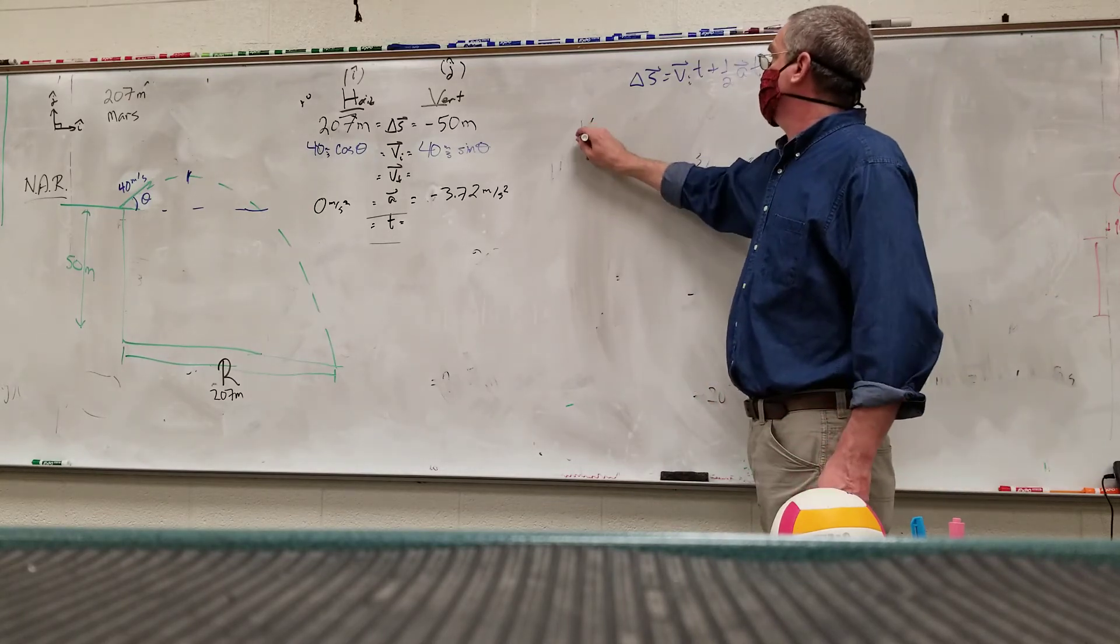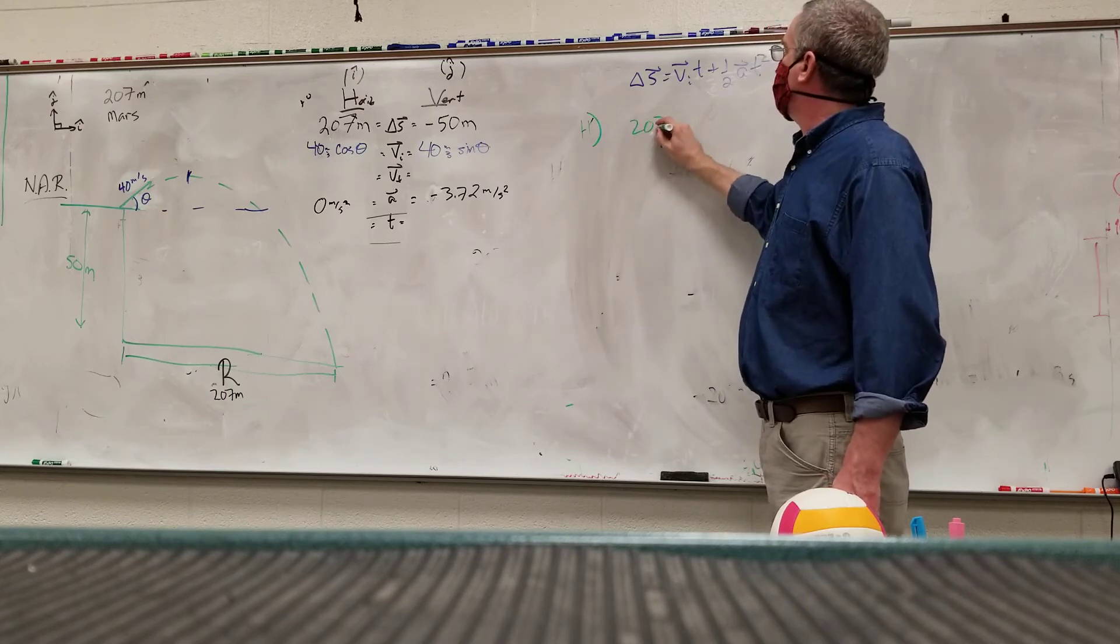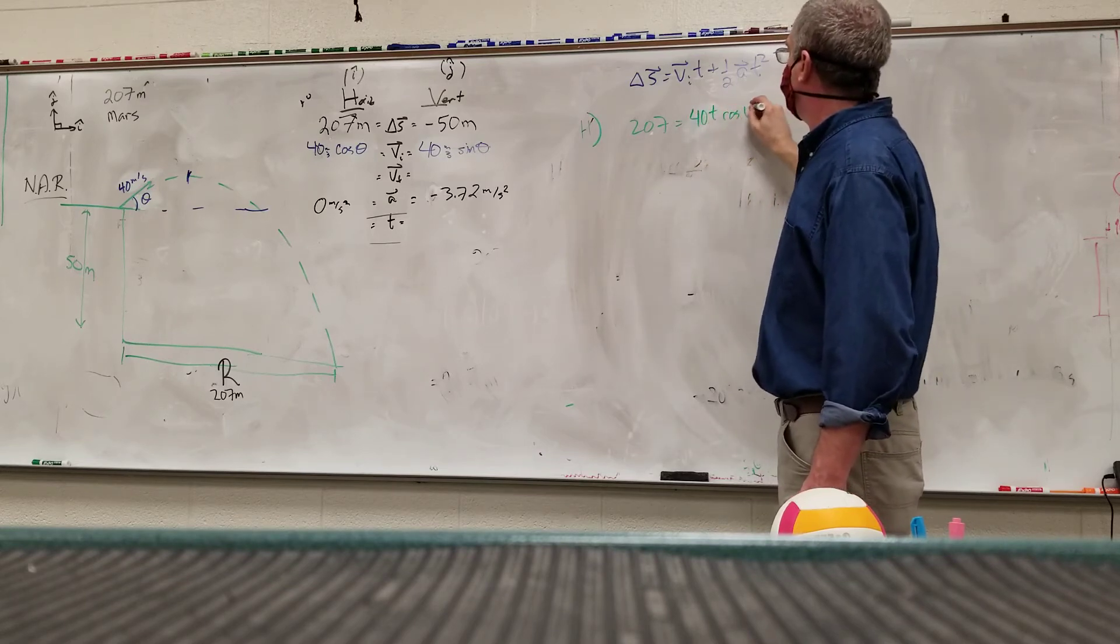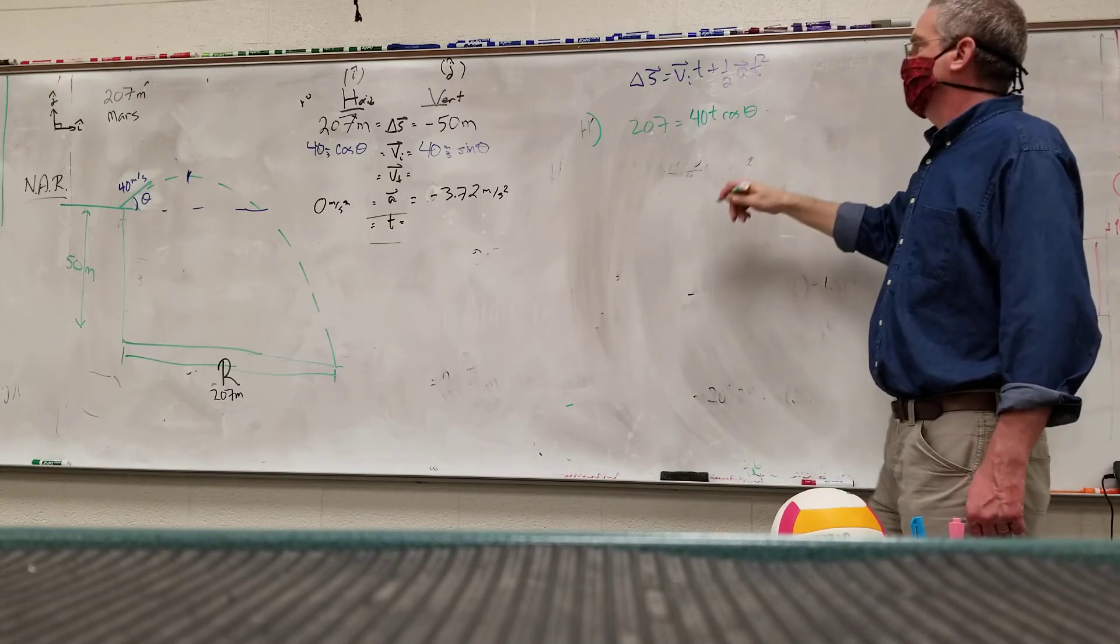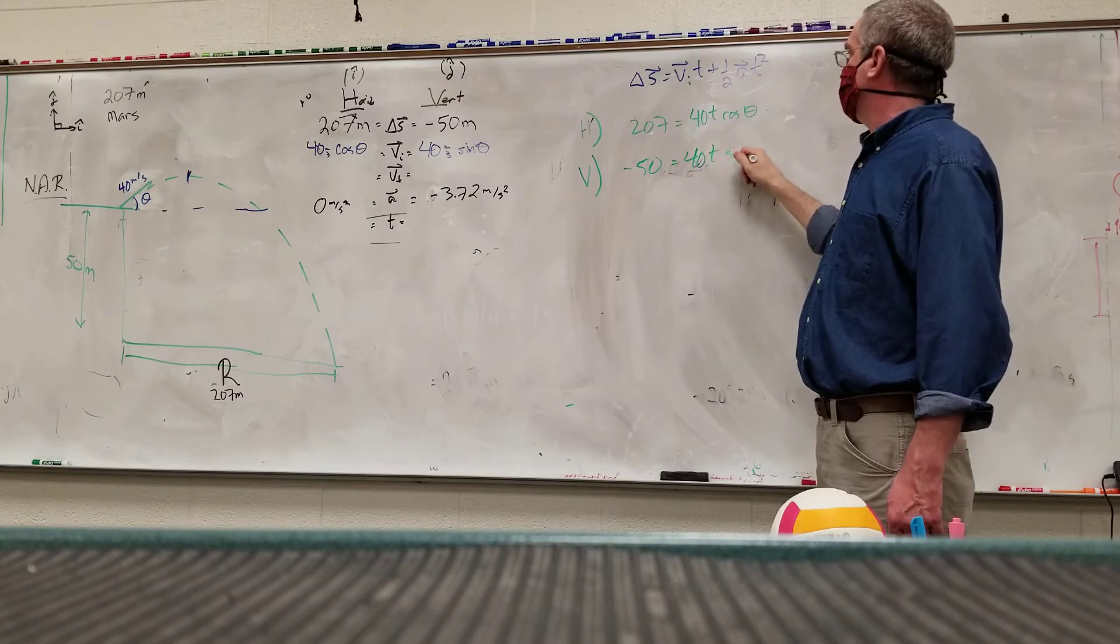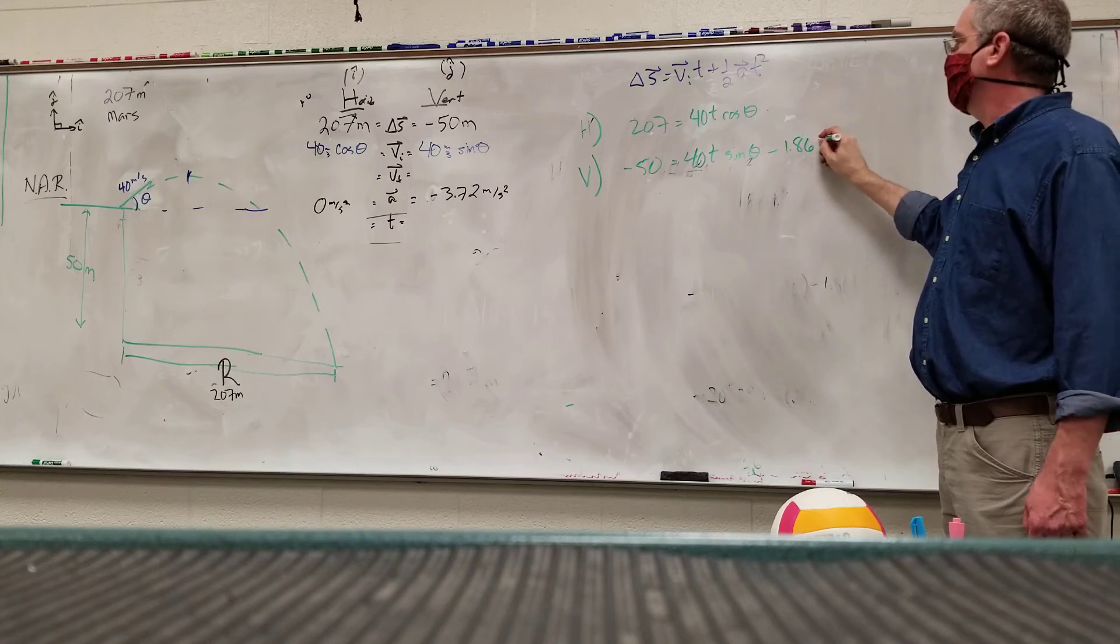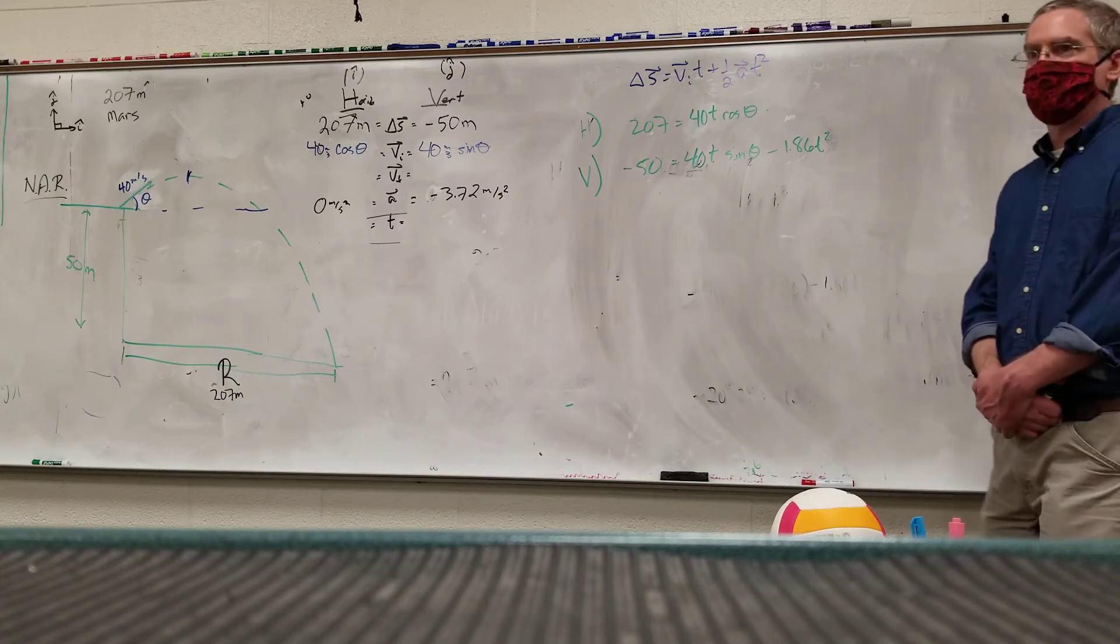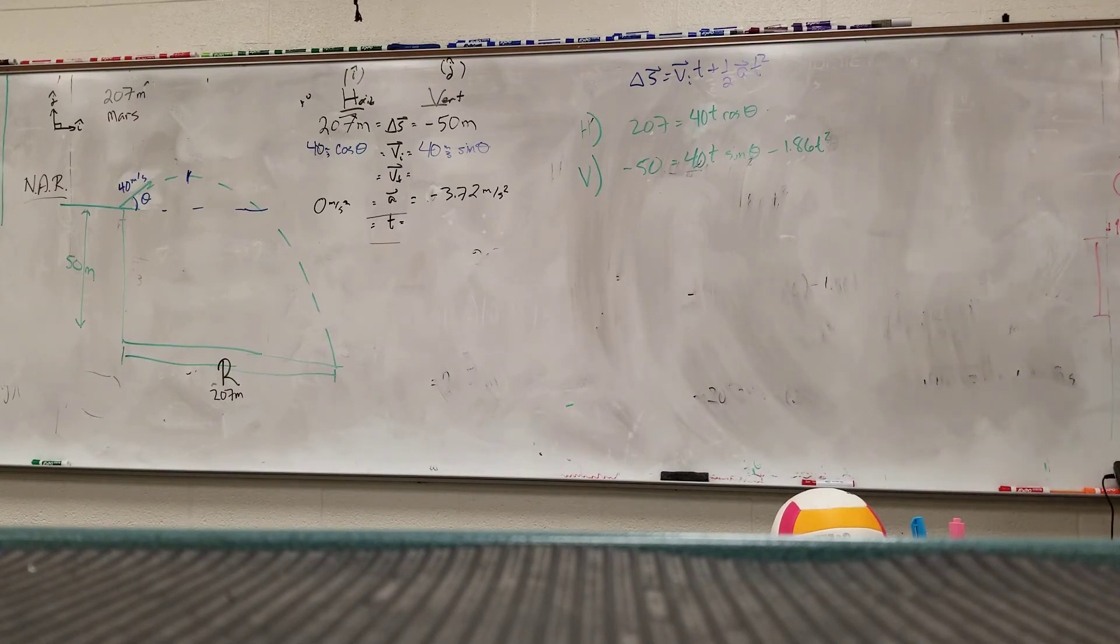Alright, so if I plug the horizontal in, I have 207 equals VT. Oh no, we know what VT is. So 40T cosine of theta plus zero. Vertically, I have negative 50 equals 40T sine of theta minus 1.86 T squared. How do we solve that? I have two equations, two unknowns.